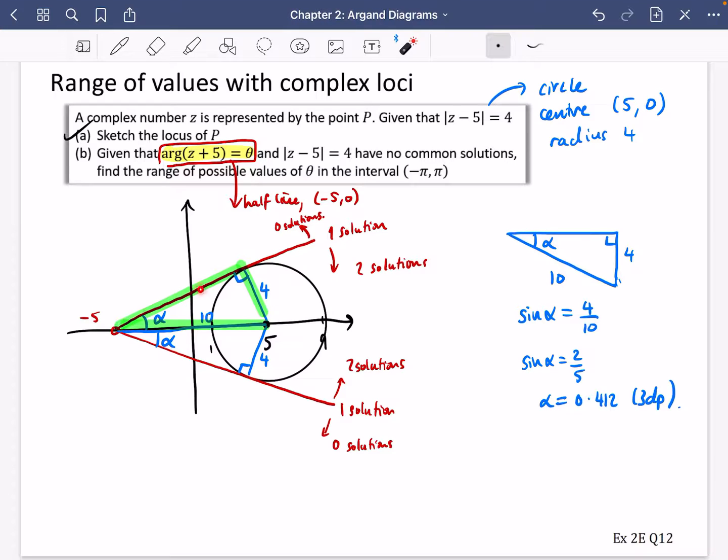So if θ is 0.412, there would be one solution. I'm going to write that down. If θ was equal to 0.412, in fact, it could also be equal to -0.412. So why don't we write plus or minus 0.412? That is one solution. But we want to say where there is no solutions. So either we're going to say that θ has got to be bigger than 0.412.